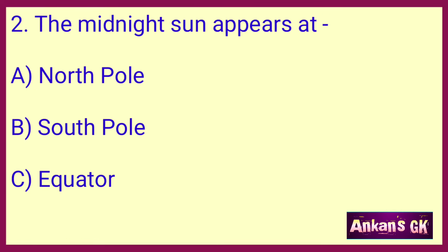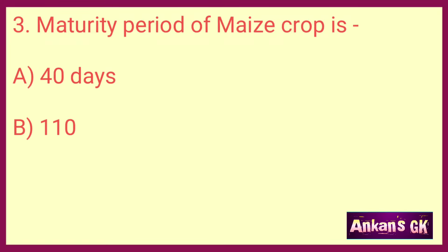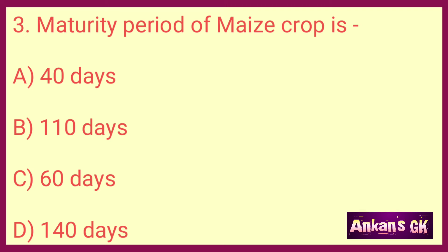The midnight sun appears at — the answer is A: North Pole. The maturity period of maize crop is — the answer is B: 110 days.